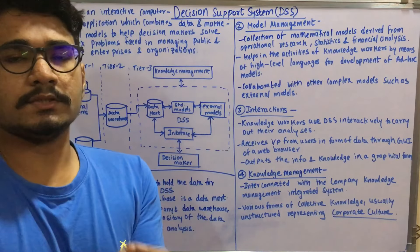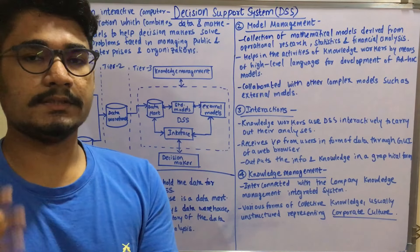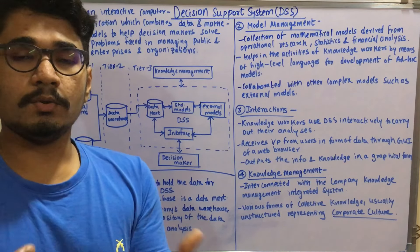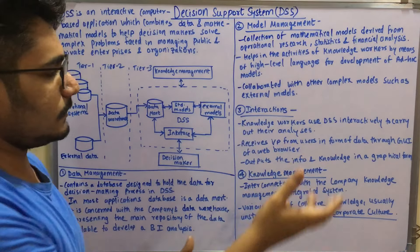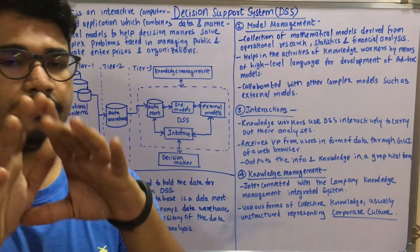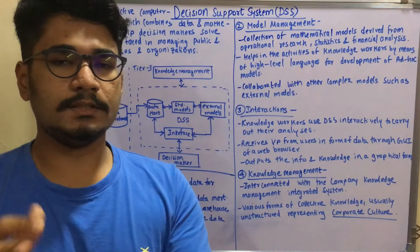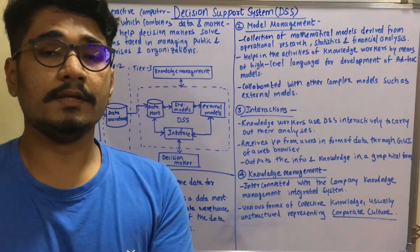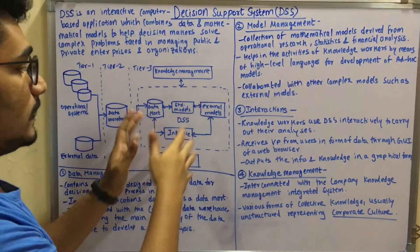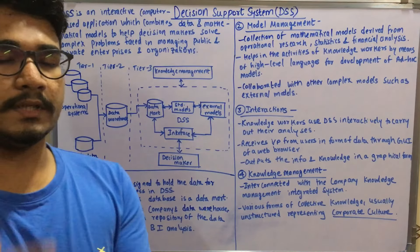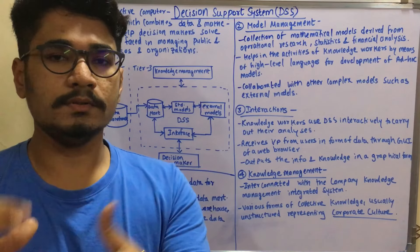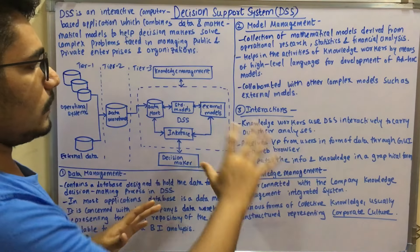For user interactions: knowledge workers use a decision support system interactively to carry out their analysis. It's not in a one-to-one fashion — based upon the requirements, users put in all queries. It receives input from users in forms like a GUI or a web browser where they enter requirements, queries, and keywords. DSS then does matching internally and outputs results in a graphical format like charts, trees, or rules.